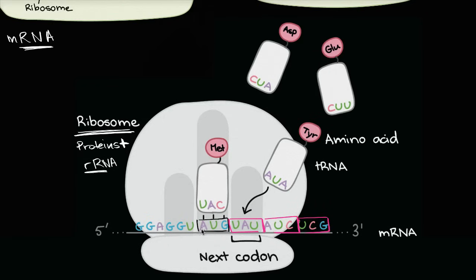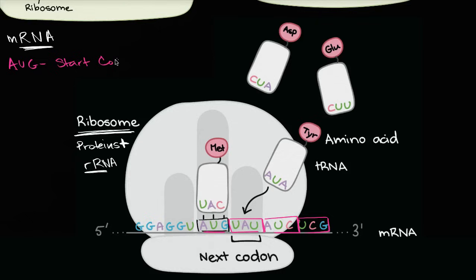This first codon right over here — we see it's AUG, so the nitrogenous bases are adenine, uracil, and guanine. This codon codes for the amino acid methionine. AUG is known as the start codon. This is where the ribosome will initially attach to start translating that messenger RNA. So this drawing shows us just starting to translate this messenger RNA.